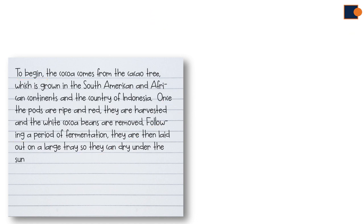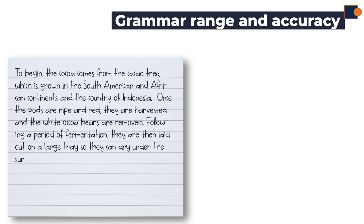The final criteria is grammar range and accuracy. In a process essay, the main focus must be on using passive voice correctly and using complex sentences with a variety of linking words. In the sample, words in the passive voice include: 'is grown,' 'are harvested,' 'are removed,' and 'are laid.' Others are in the active voice, such as 'are ripe' and 'can dry,' because these are intransitive verbs.